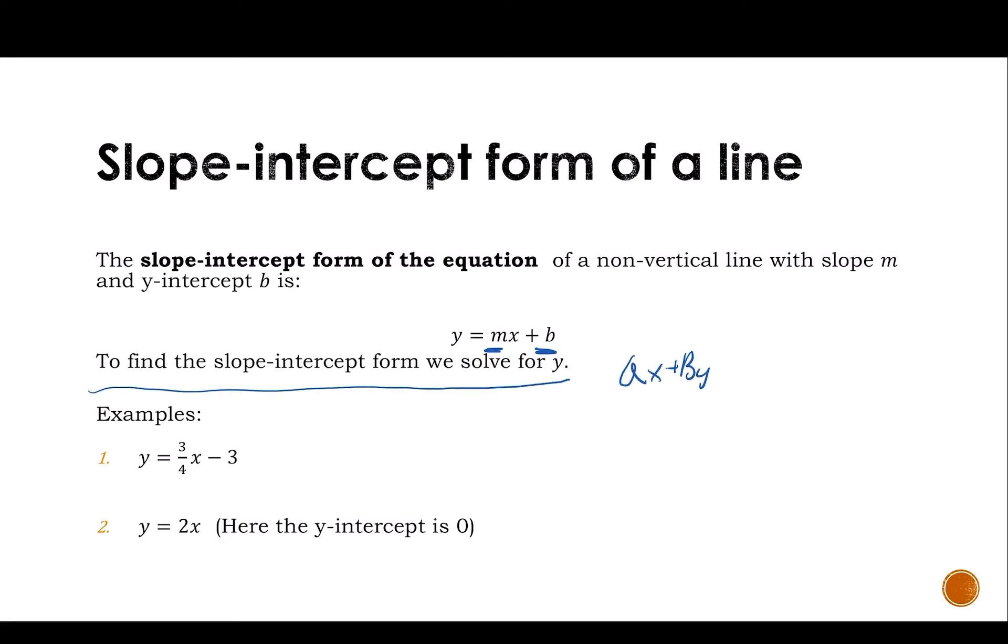In order to find the slope-intercept form, we always solve for y. So if I'm given something in standard form, we solve for y and it will tell us a lot more about that line. We don't know what this line looks like, but now we know the slope. We know where it crosses the y-axis.